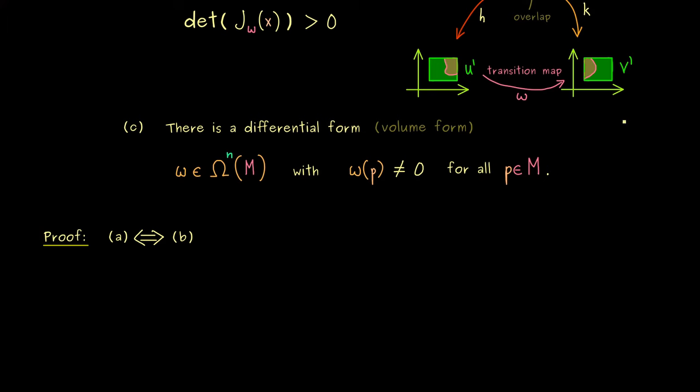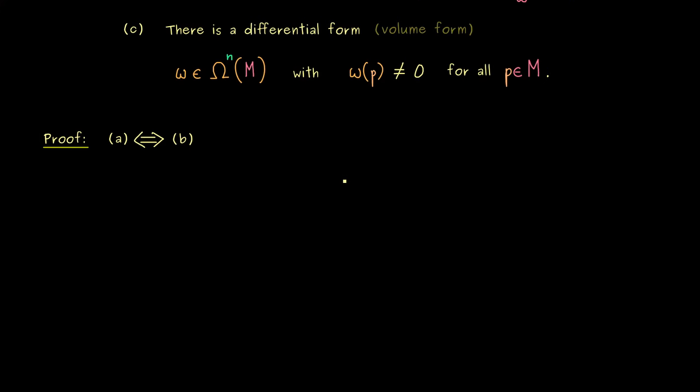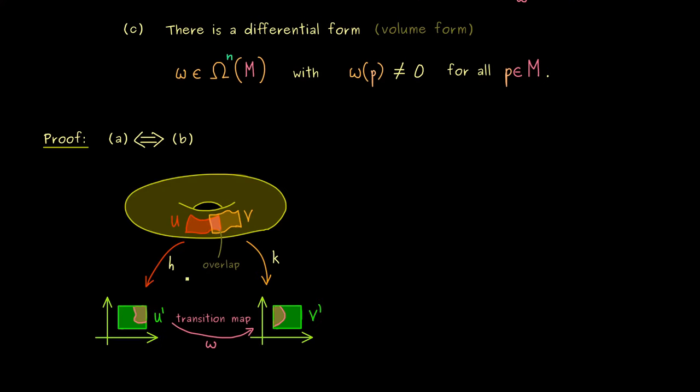The whole proof can be explained by reusing the picture from before. For any two charts h and k that overlap, we have a requirement for the orientation. This means, the first thing we can do here is to translate this picture to the tangent spaces. And let's just fix one point p in this intersection here. This implies that we only have to consider one tangent space. So this here is our tangent space T_p M.